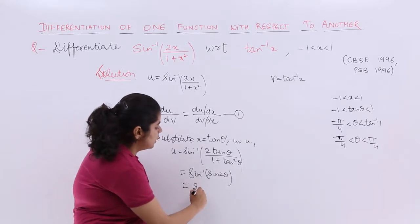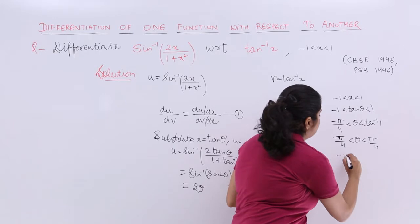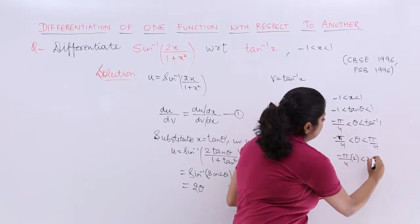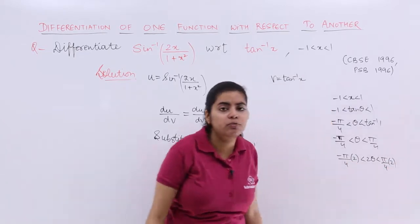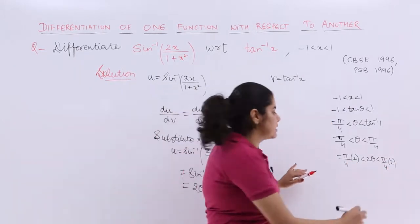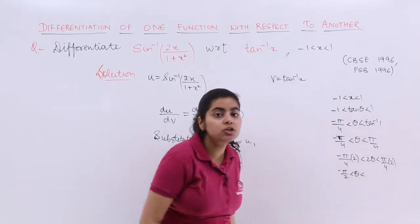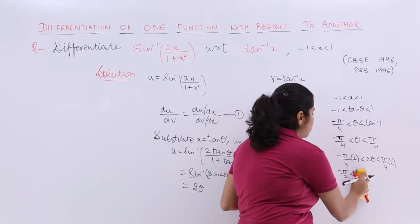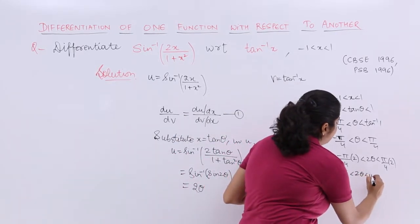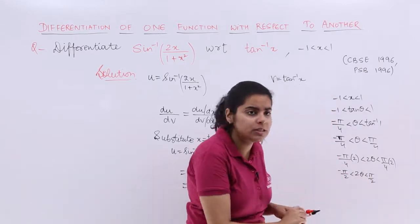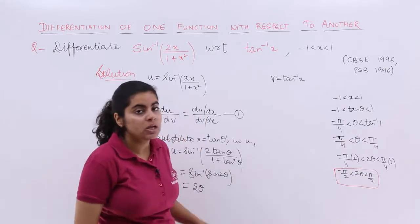Now but here it was theta. But here after cancellation, I get 2 theta. So 2 theta will be 2 into this whole thing. Now 2 theta should be lying somewhere in minus pi by 2 to pi by 2. That is important to know where actually my 2 theta lies.